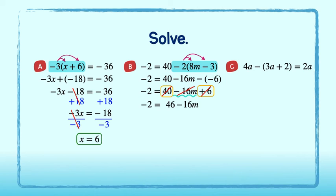Now, let's start to solve. First, subtract 46 from both sides of the equation to get negative 48 equal to negative 16m. Then, divide both sides by negative 16 to get 3 equal to m.